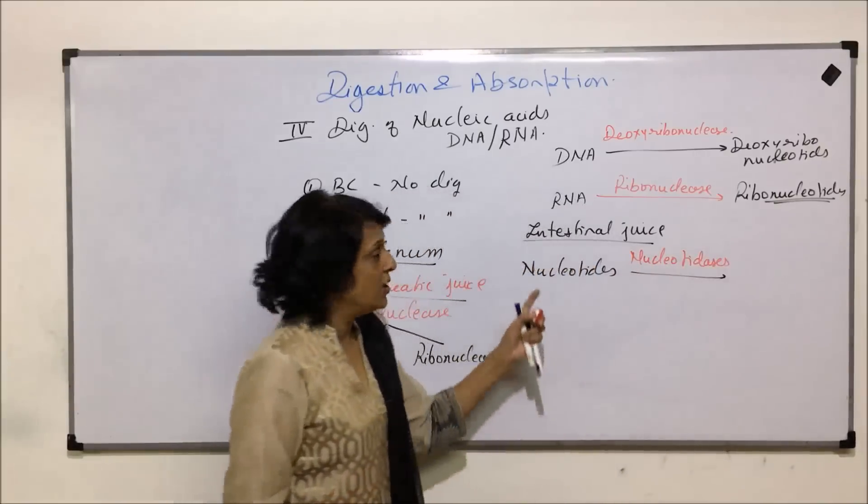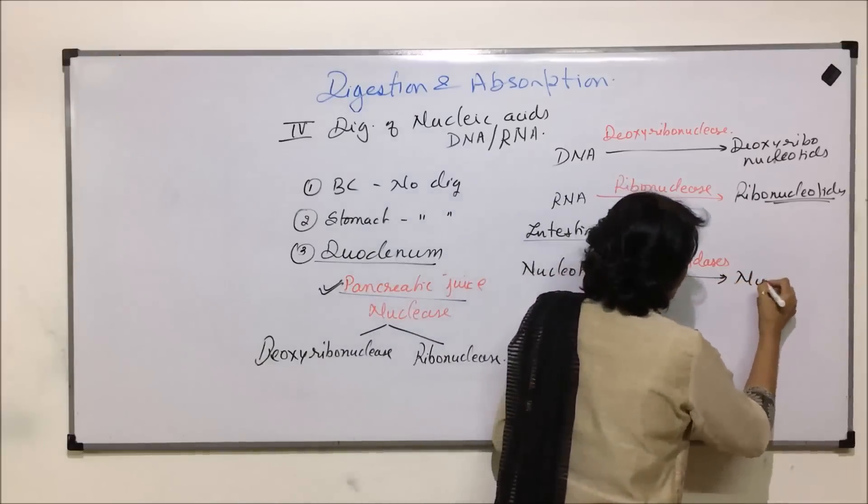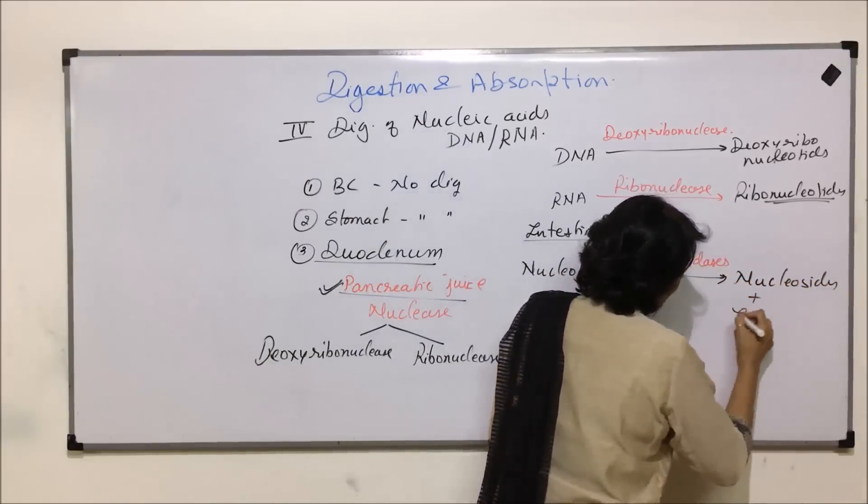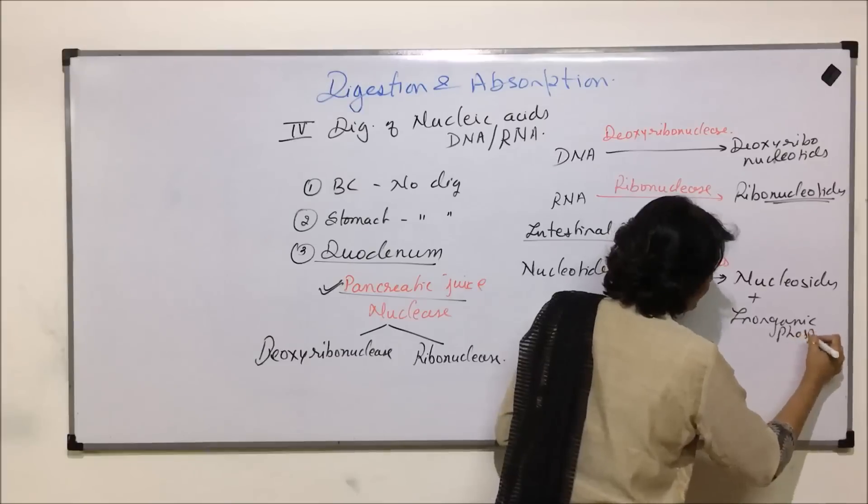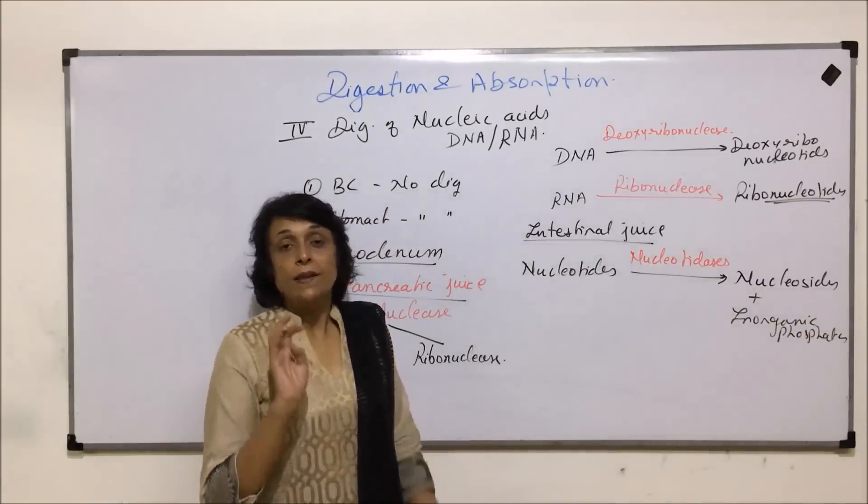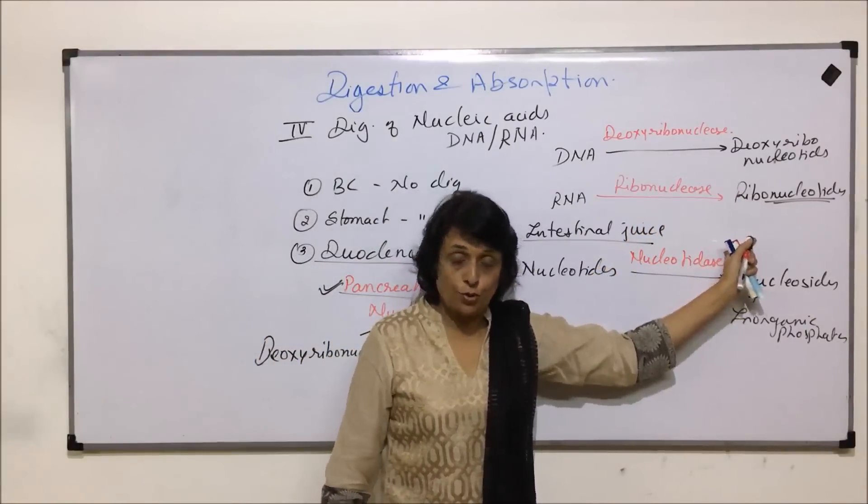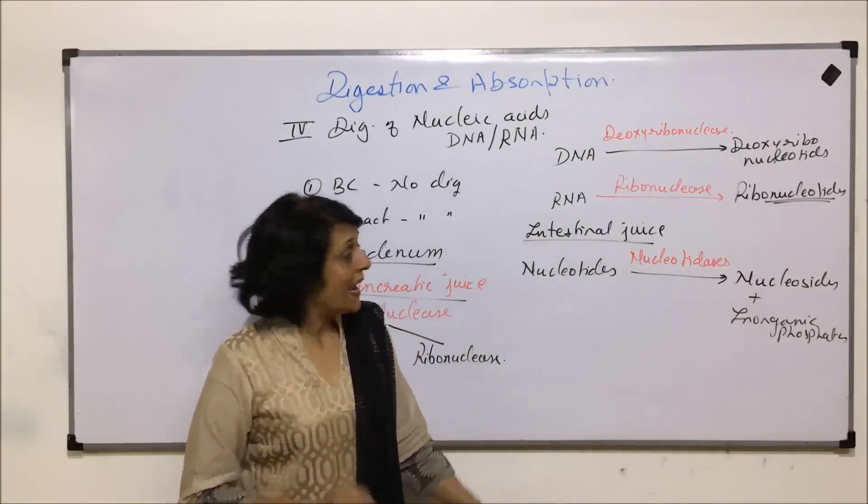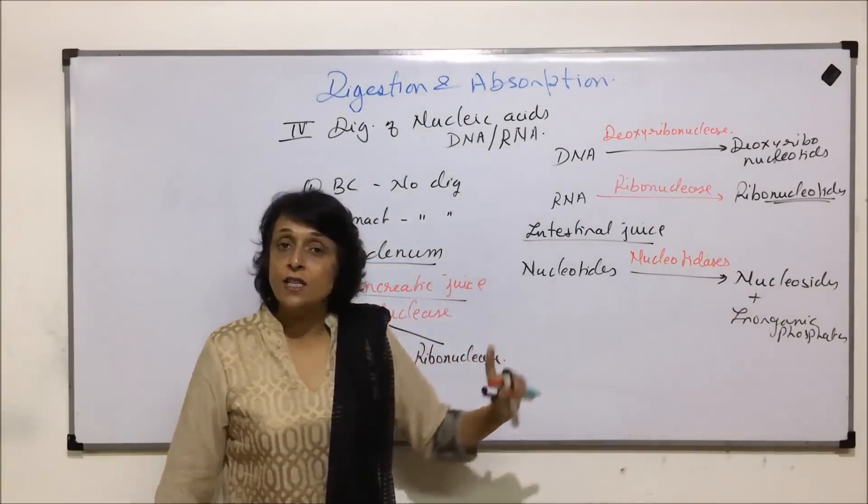And these nucleotides are broken down into nucleosides and inorganic phosphates. Nucleotides are made up of three things: there is pentose sugar, it can be deoxyribose sugar or ribose sugar, plus there is nitrogen base, and the inorganic phosphate. So the phosphate is released.